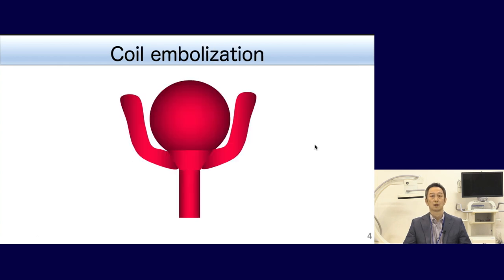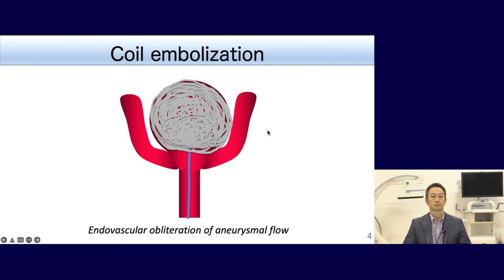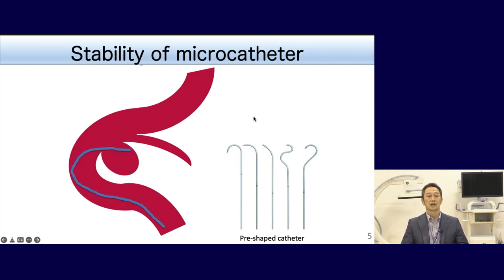Aneurysmal coil embolization is composed of microcatheter approach and coil insertion. Framing, filling, and finishing coils are inserted into the aneurysm step by step, and obliteration of aneurysmal flow is the concept of this treatment. Stability of the microcatheter is very important. If the tip of the microcatheter is against the wall, it carries a risk of wire and catheter perforation, or being easily kicked out of the aneurysm. So the tip of the catheter should be around the center.